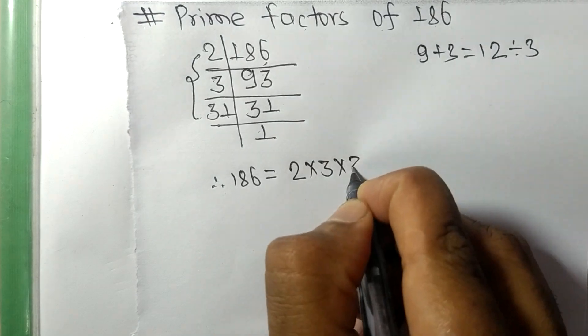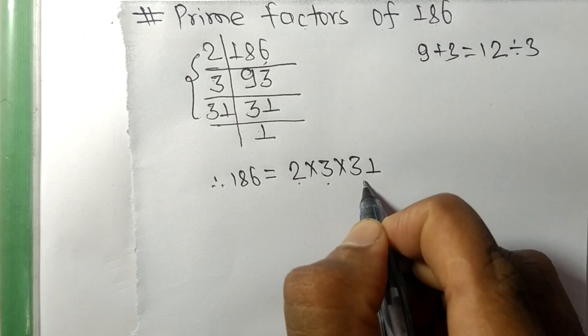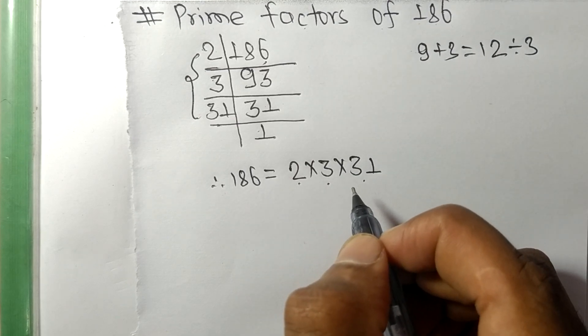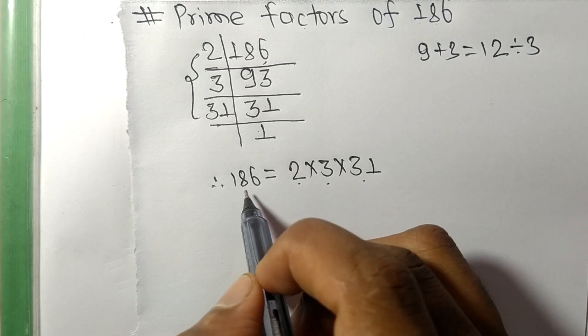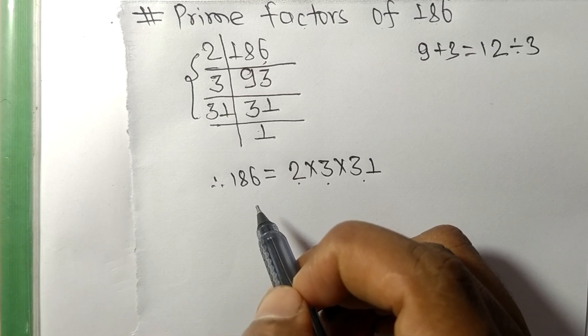So 2, 3, and 31 are the prime factors of 186. So this much for today and thanks for watching.